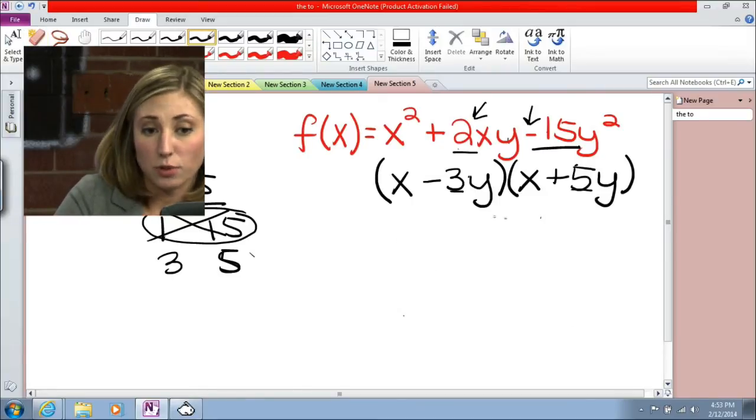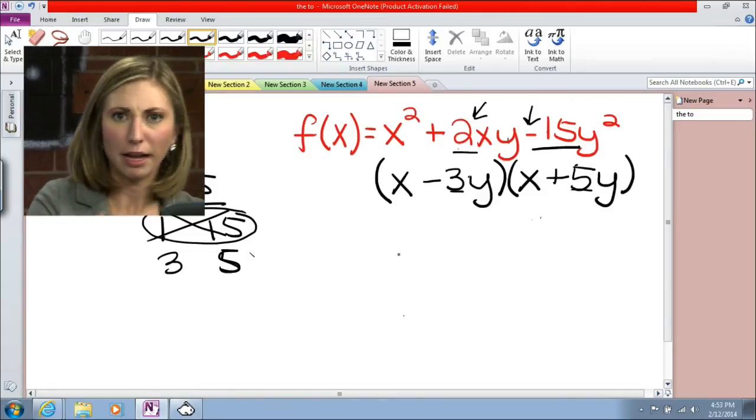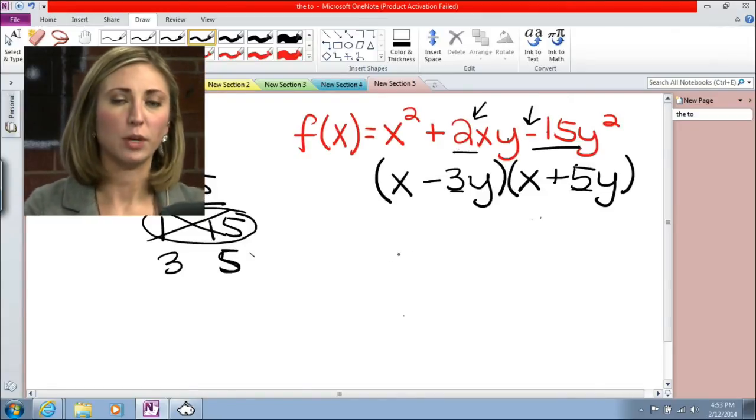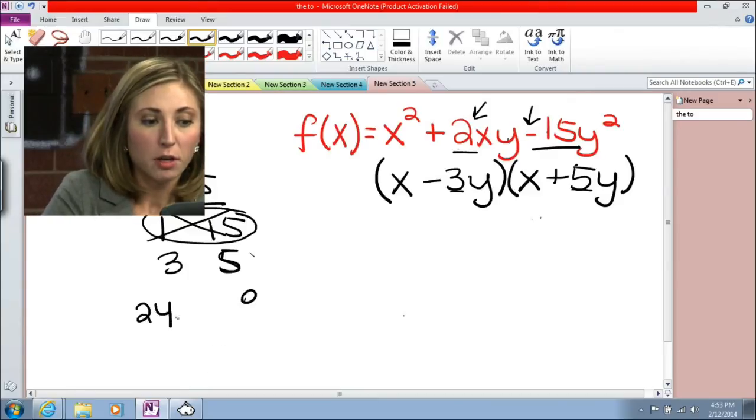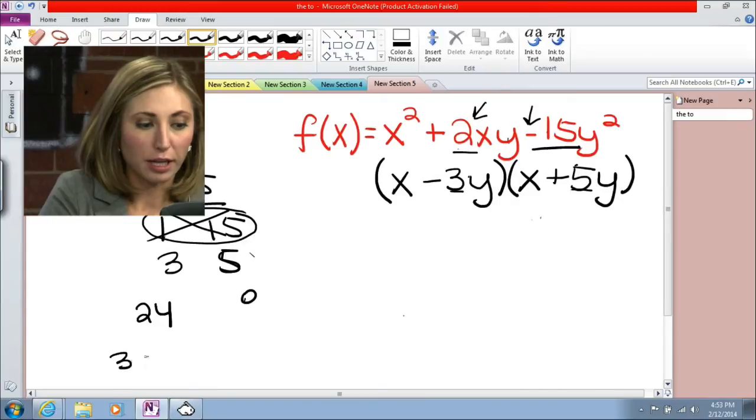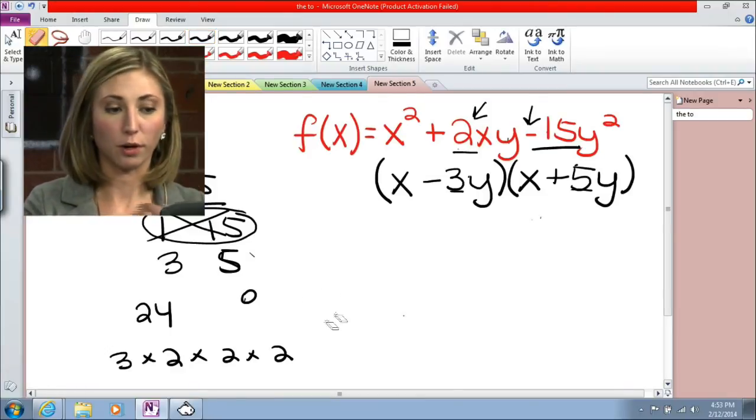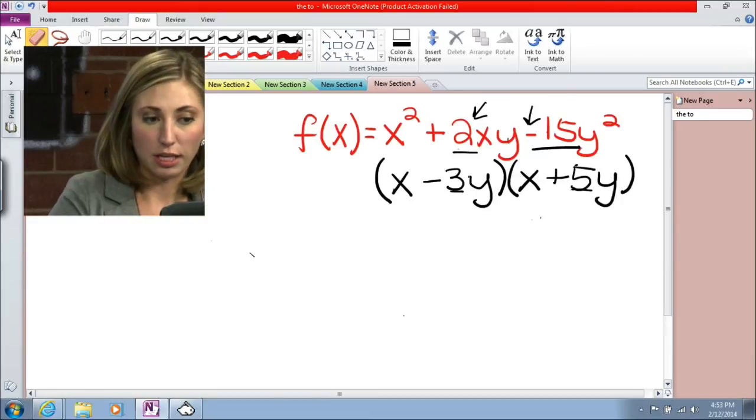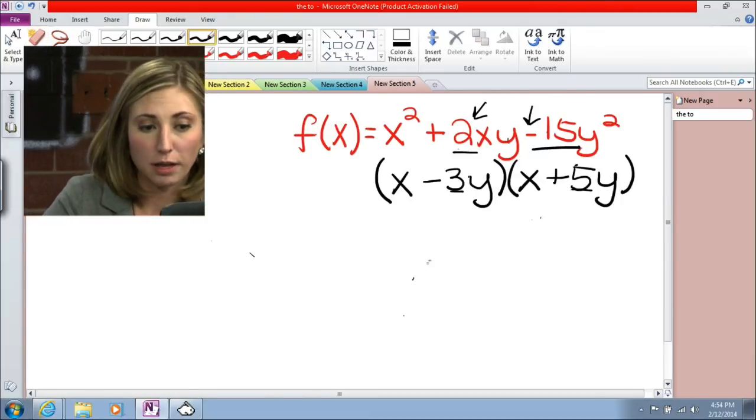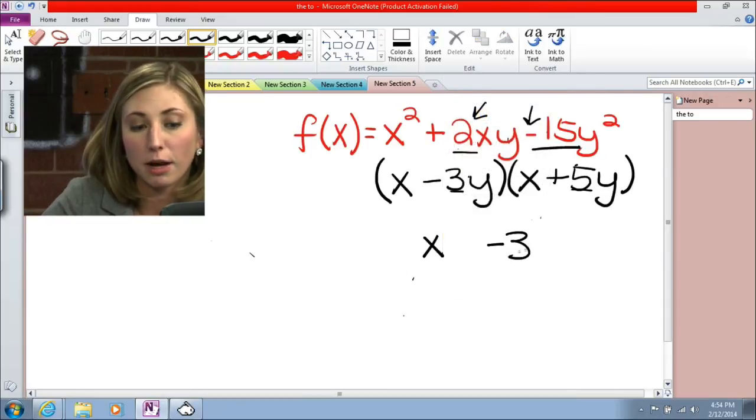Now what we can do, so we factored it, what we can do to check our answer is to multiply them back together to see if we get the polynomial we started with. For example, when we factored 24, we ended up with 3 times 2 times 2 times 2, and if we wanted to check that, we would actually multiply those out to see if we got 24. Now we'll do the same thing with these binomials, we're going to multiply them together. And I showed you guys last week an area model, so we'll use the area model to do that.